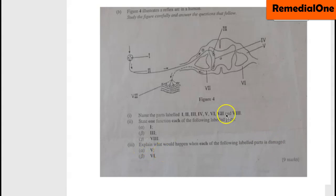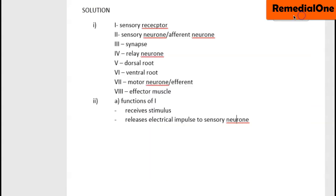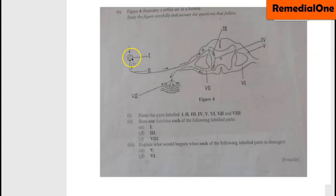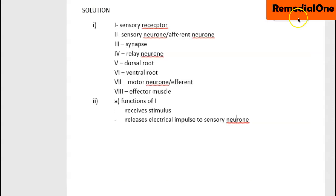Now let's look at the possible solution to this question. The part labeled I is sensory receptor. The part labeled II is called sensory neuron, or you can say afferent neuron.